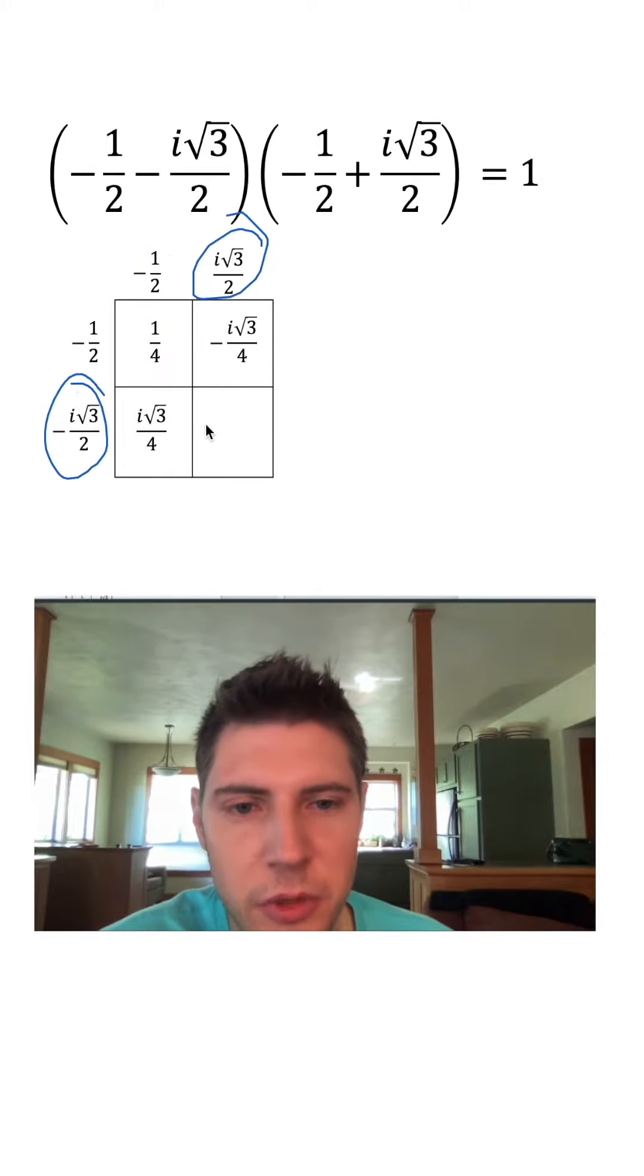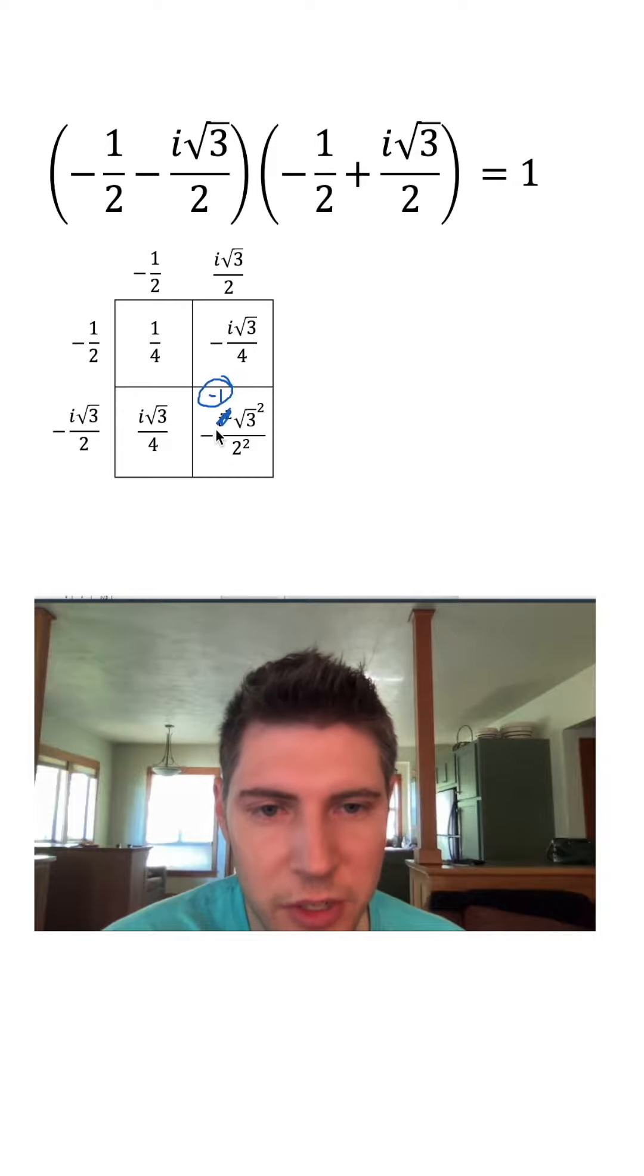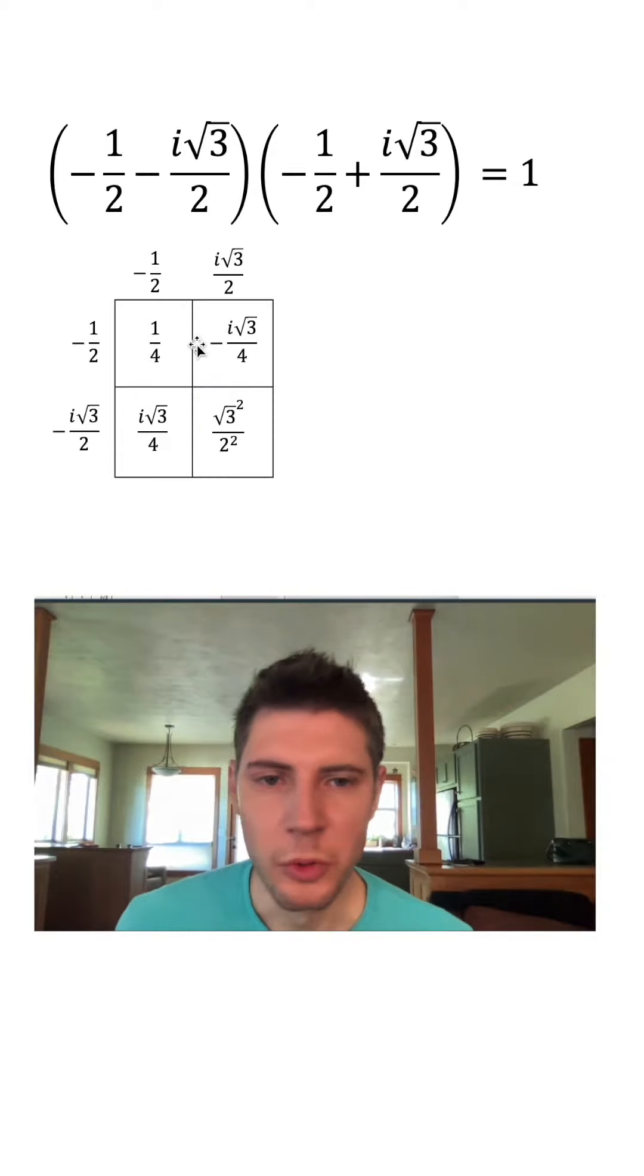So last we have this times this, which is negative i squared root three squared over two squared. i squared becomes negative one. And this negative one times this negative becomes positive. Root three squared becomes three and two squared becomes four.